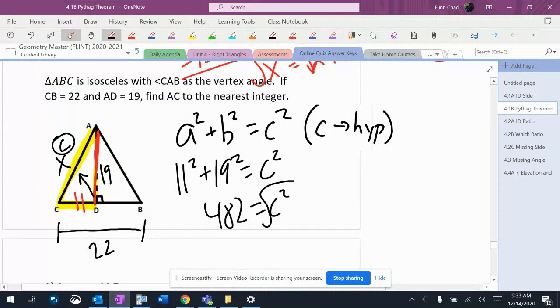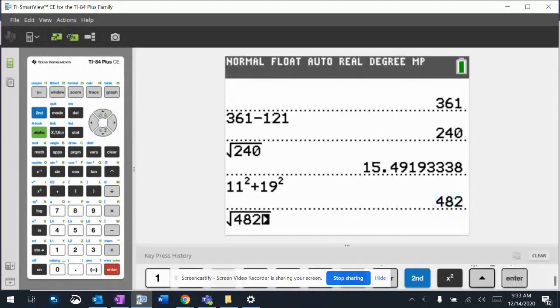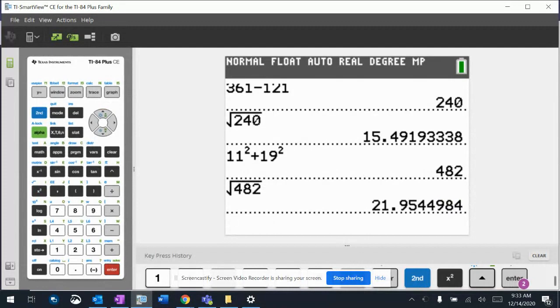The squared by itself, the C squared by itself, that could be X squared too. But it's a square root. 21.954.